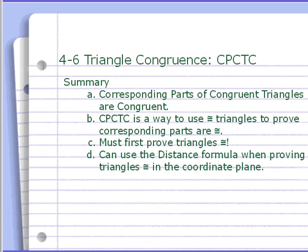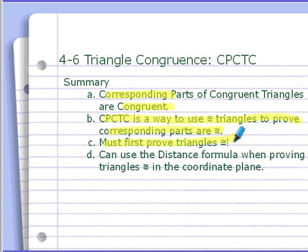That's our summary. We looked at how corresponding parts of congruent triangles are congruent, using that to show things are congruent once we know the triangles are congruent. Remember, you must show the triangles are congruent first. We can use the distance formula to prove triangles are congruent by showing all sides are congruent. Write down your questions and we'll see you next time.